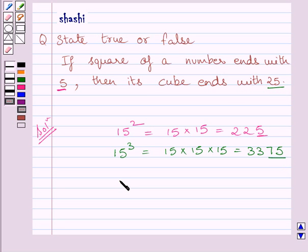Whereas if we consider square of 5, it is equal to 25, and cube of 5 is equal to 125.